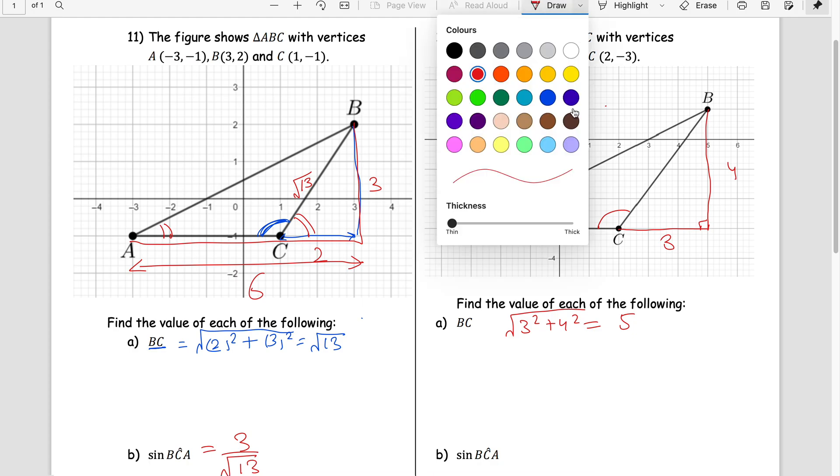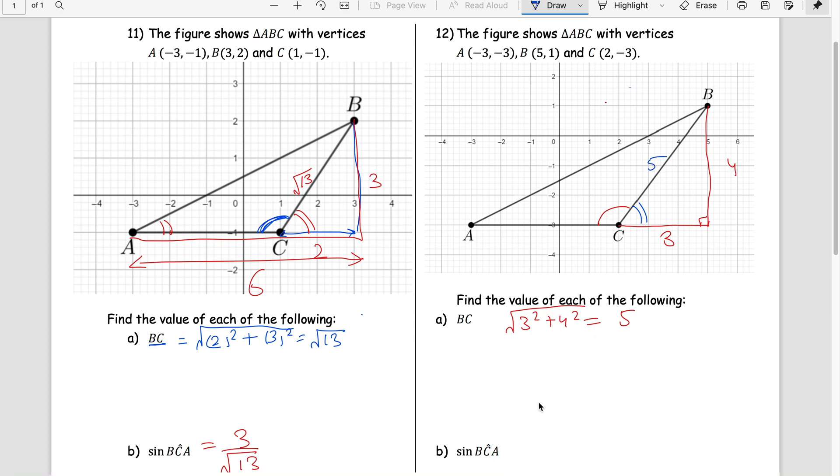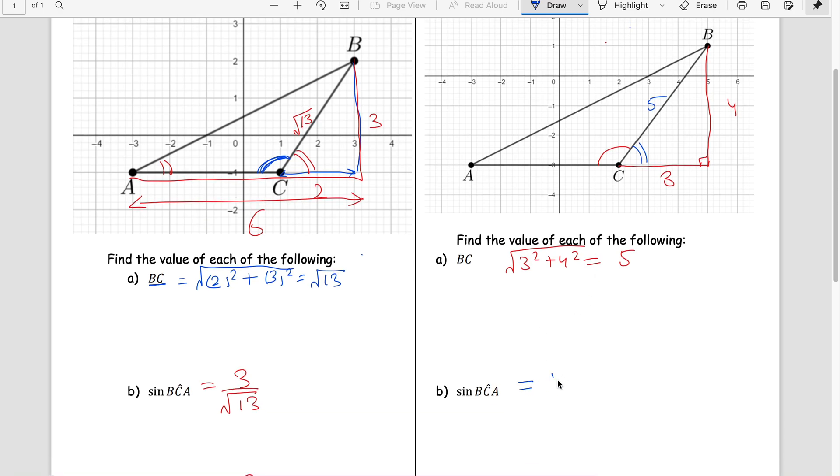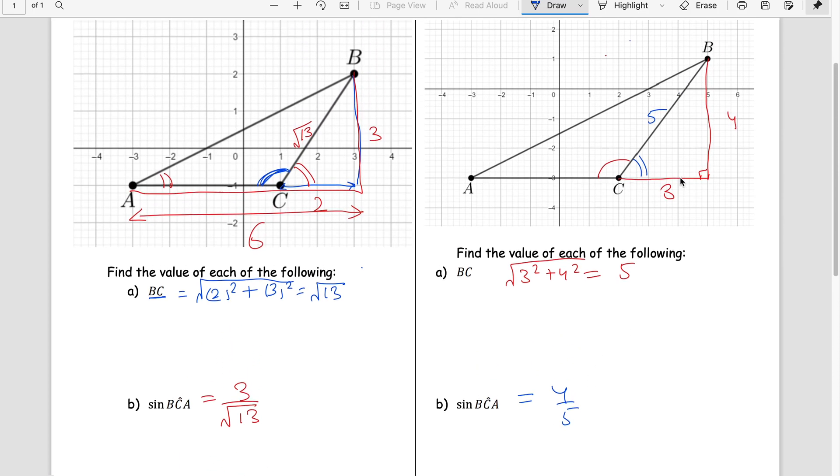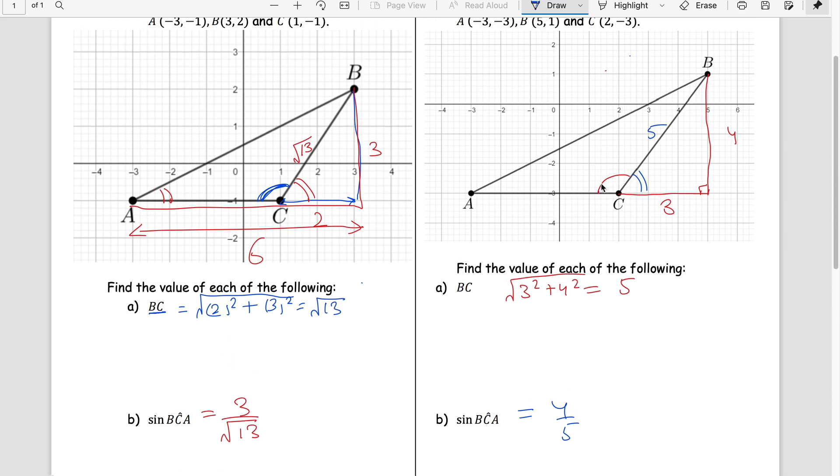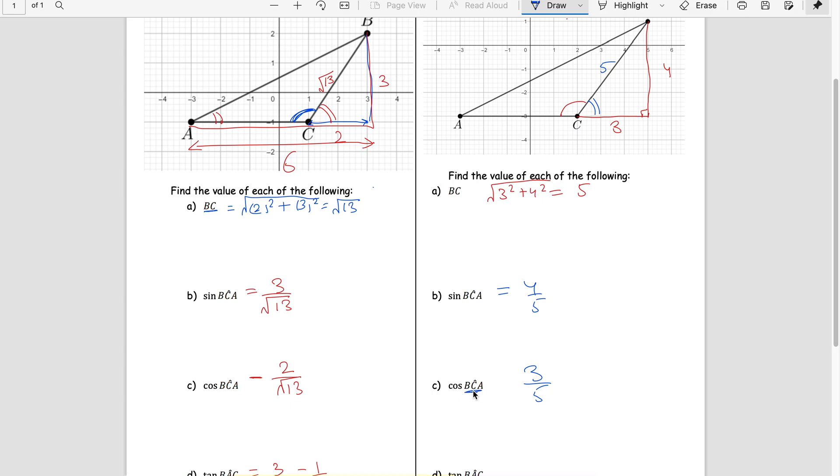Cos BCA. Cos BCA is this angle moving to right. Cos is base over hypotenuse, that is 3 by 5. So 3 by 5, but we know that the initial angle was obtuse, so you put a negative sign here.